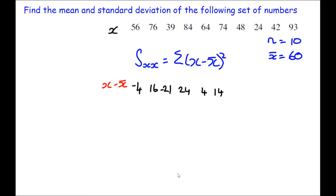48 minus 60, I'm once again going to get a negative answer here. So 48 minus 60 is negative 12. 24 minus 60 is going to leave me with negative 36. 42 minus 60 is negative 18. And then 93 minus 60 will leave you with 33.